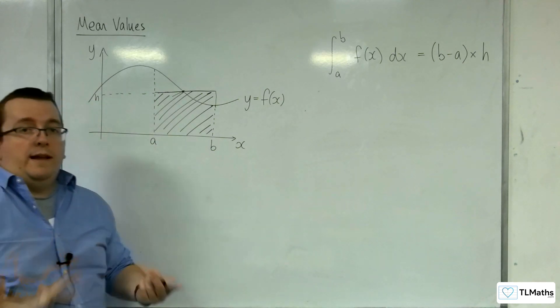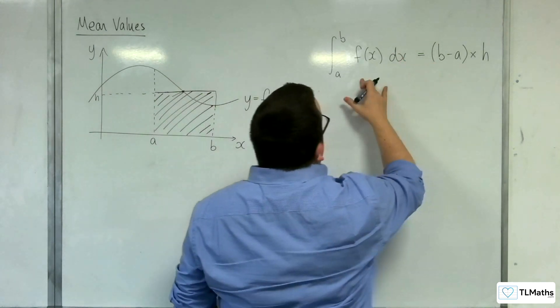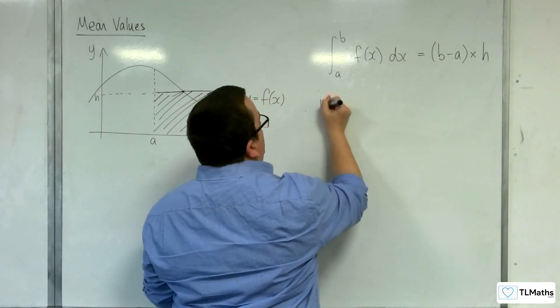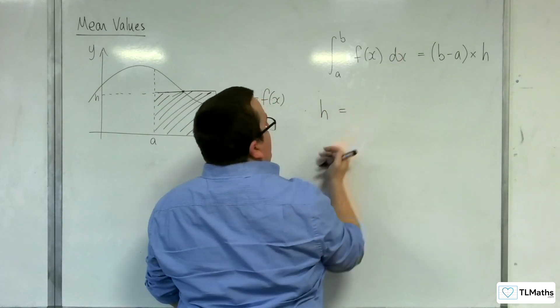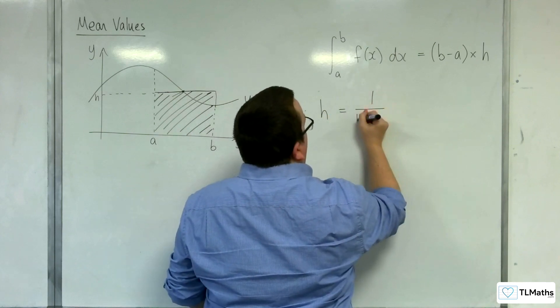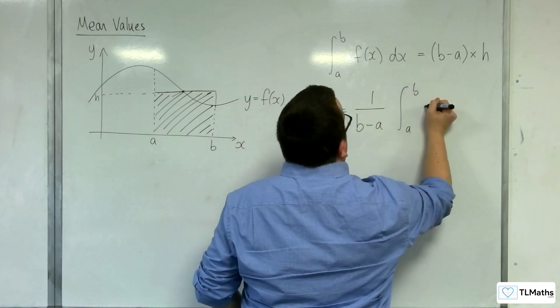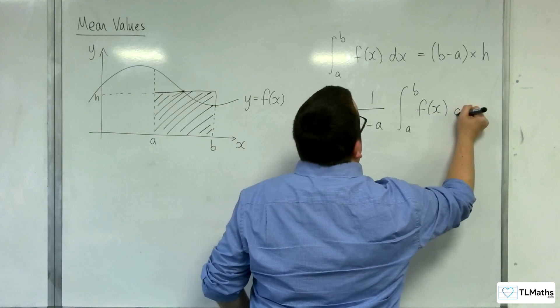So if I want to work out what the height of that rectangle is, all I need to do is divide both sides by b take away a. So the mean value of your function, h, is equal to 1 over b take away a times the integral between a and b of f of x dx.